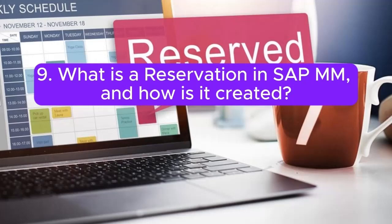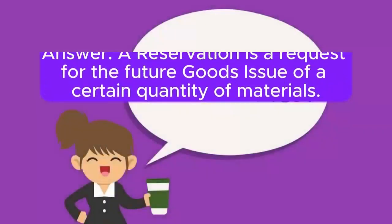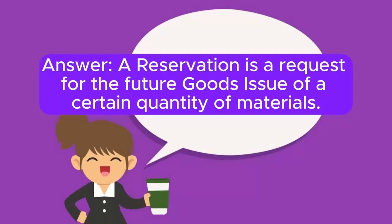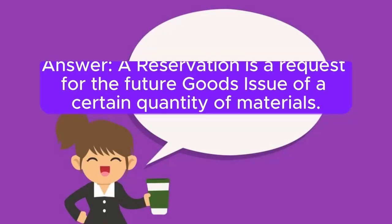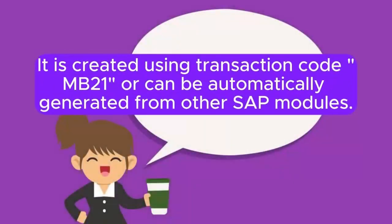Question 9: What is a reservation in SAP MM, and how is it created? Answer: A reservation is a request for the future goods issue of a certain quantity of materials. It is created using transaction code MB21, or can be automatically generated from other SAP modules.